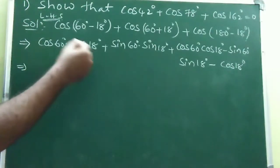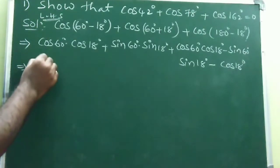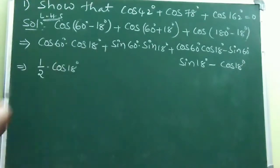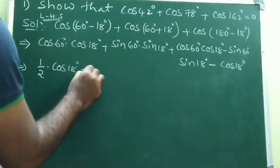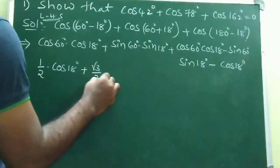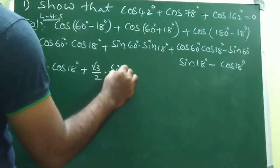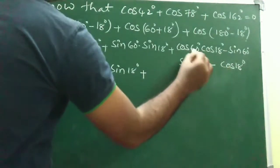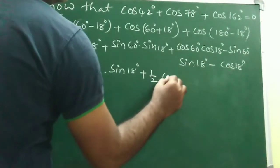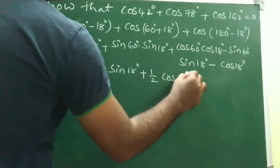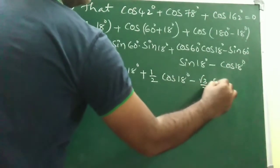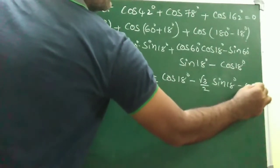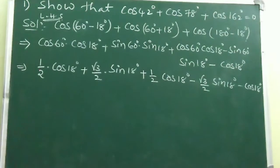Now substitute the values: cos 60° = 1/2, so we have (1/2)cos 18° + (√3/2)sin 18°, plus (1/2)cos 18° - (√3/2)sin 18°, minus cos 18°. The sin 18° terms are one positive and one negative, so they cancel.